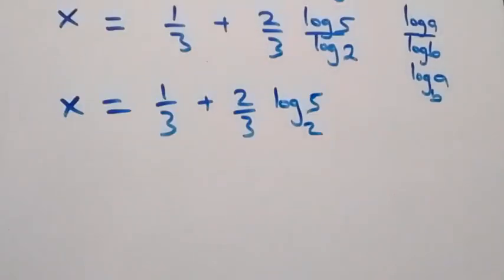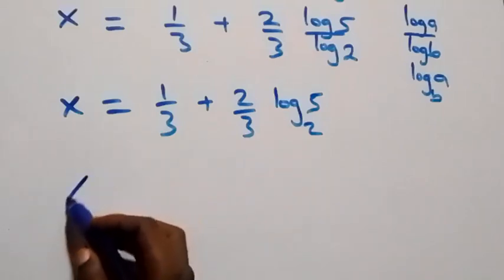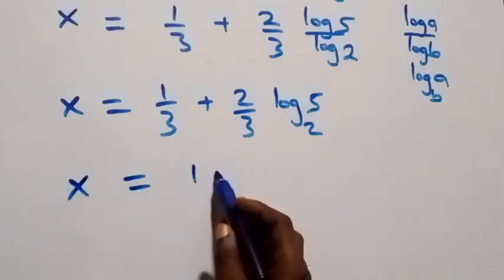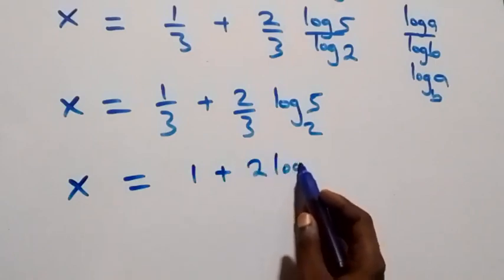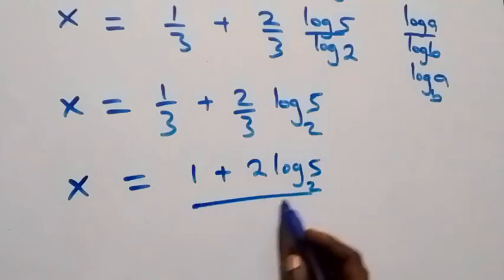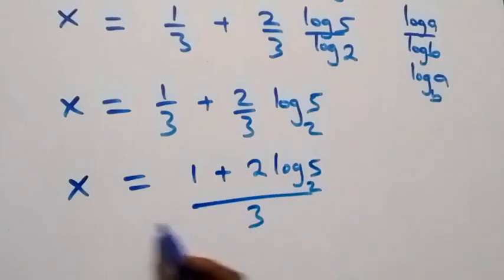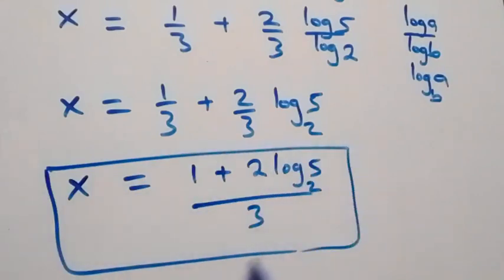Combining these together, we can write it as x equals to 1 plus 2 log base 2 of 5, all over 3. So here we have the value of x in this problem as 1 plus 2 log base 2 of 5, all over 3. Now let's check if this satisfies the given problem.